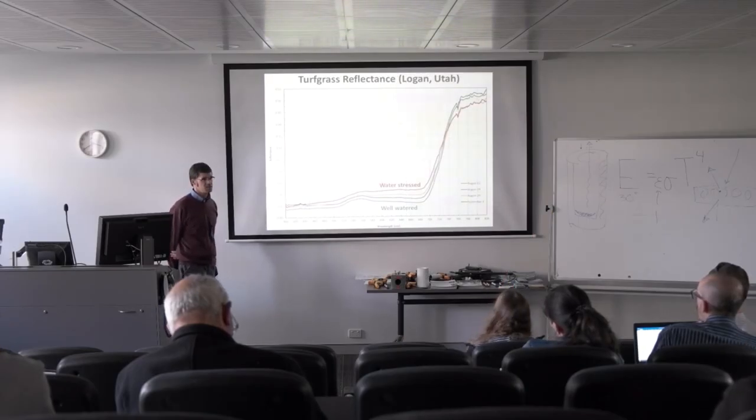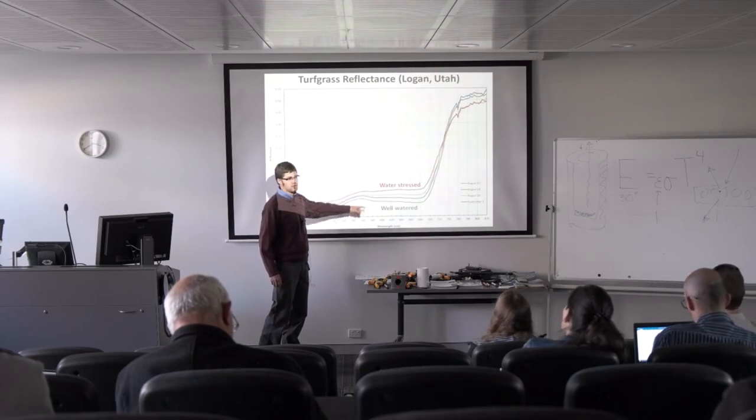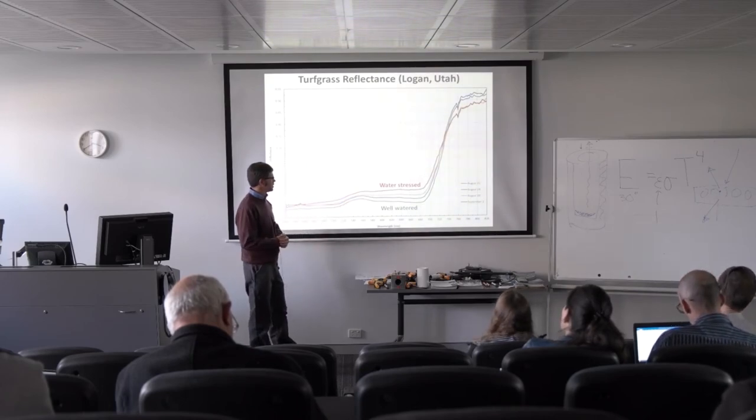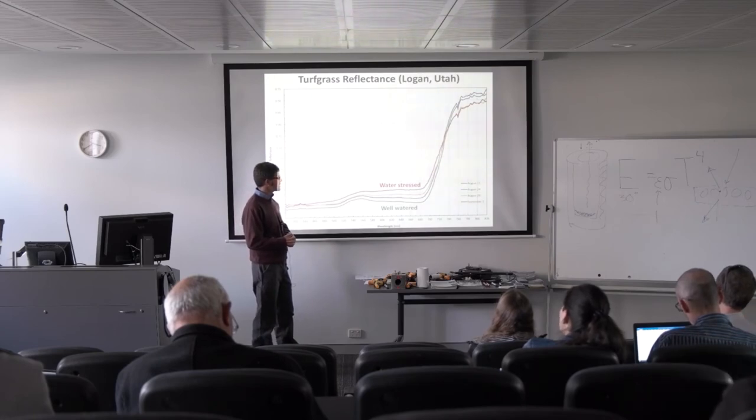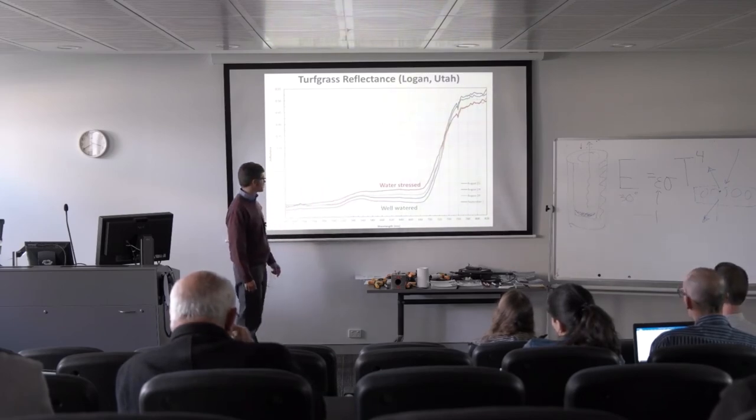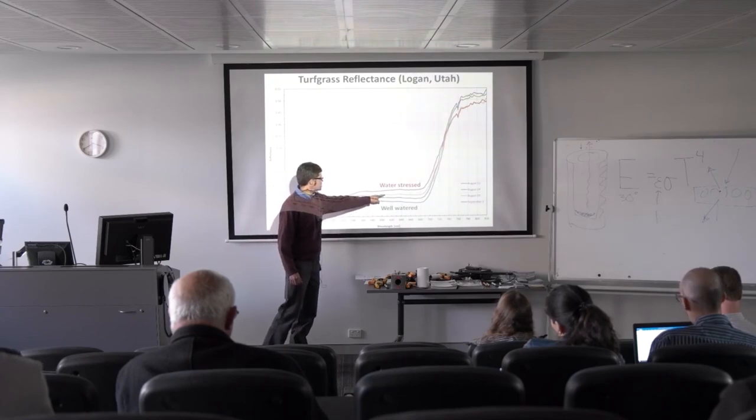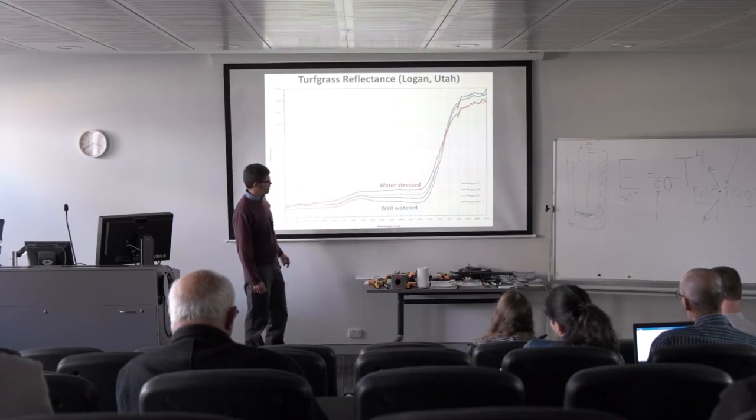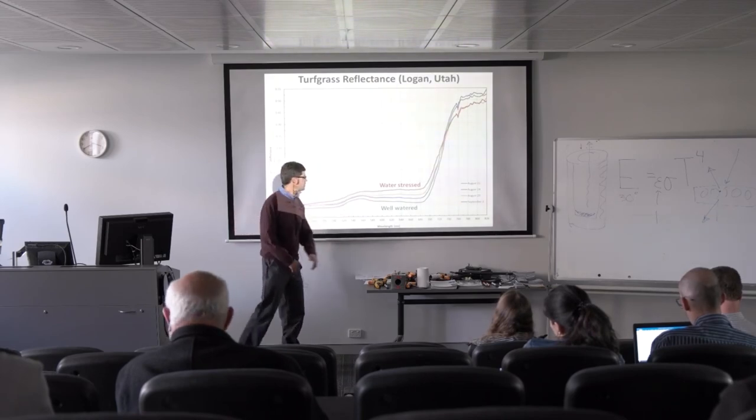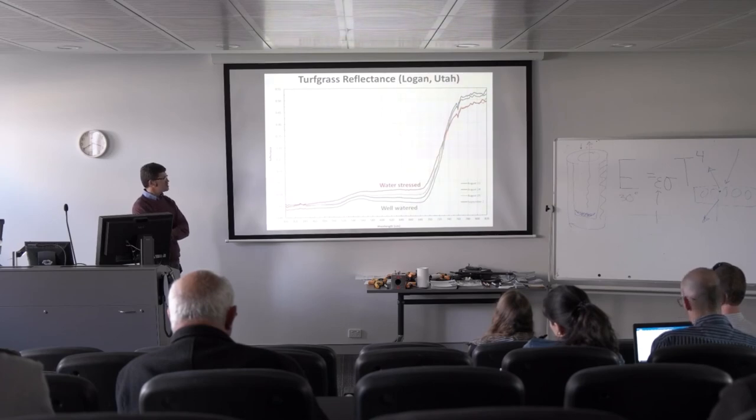This is the reflectance measurement on the last day that the irrigation system was on. Then we turned off the water. About three days later, on August 24th, the reflectance spectrum was here. Five days later, on August 29th, it was here. And then four days later, on September 2nd, it was here.